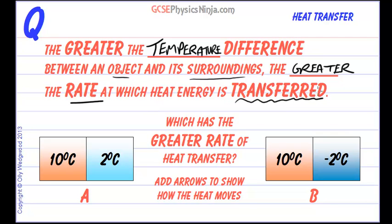So this is saying that if you have two objects which have a bigger temperature difference between them, then we will get more heat energy moving from one to the other per second. That's what's meant by rate.